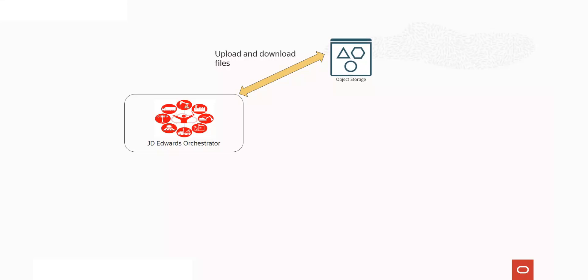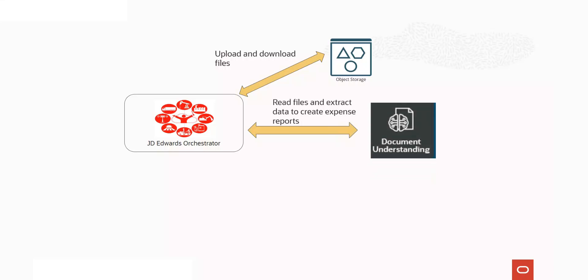For example, you can create orchestrations that call the OCI Object Storage services to upload and download files. Once the files reside on OCI Object Storage, you might then call OCI Artificial Intelligence Services such as Document Understanding to read the files and extract key data from them.